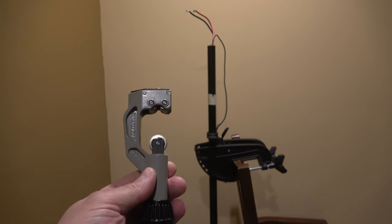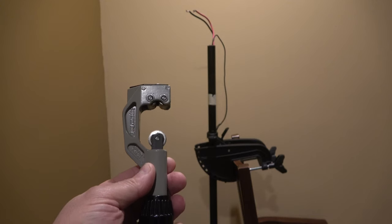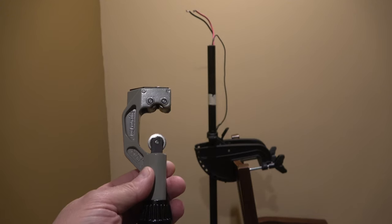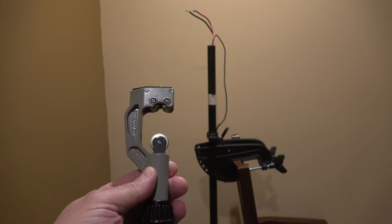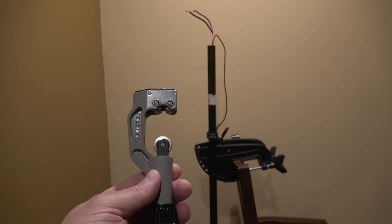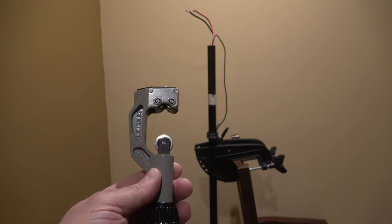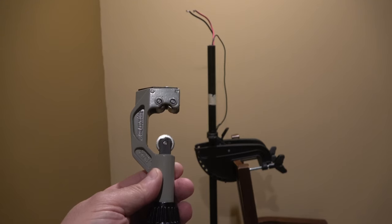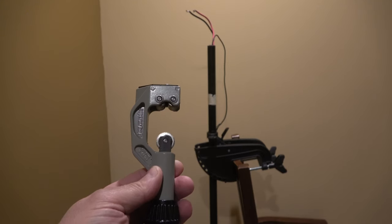Basically you just put it on there, tighten it up and you rotate it. As it gets looser you keep tightening it. Rotate, tighten and just keep repeating until it cuts all the way through. It takes a couple minutes but it produces a super clean cut and you don't have to worry about cutting the wires inside the tube.